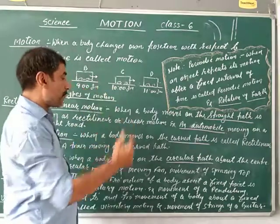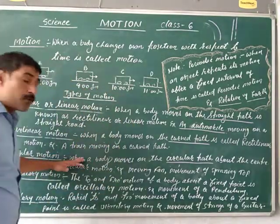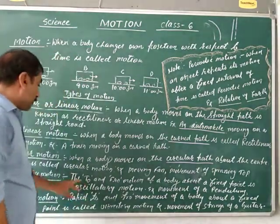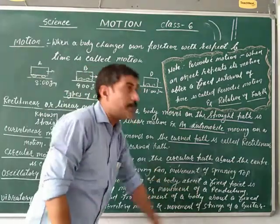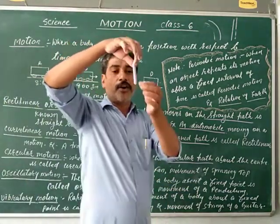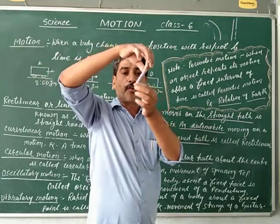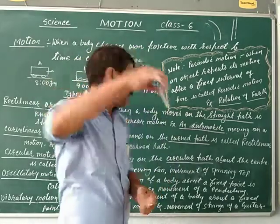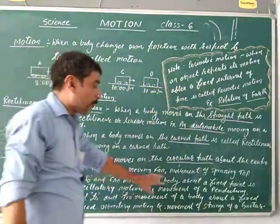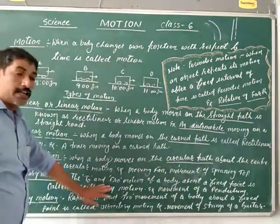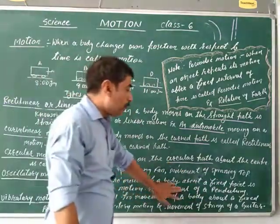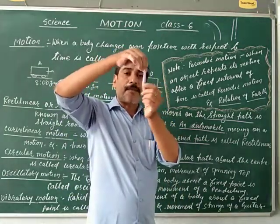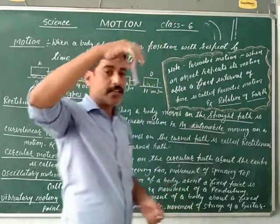Next type of motion is oscillatory motion. The to-and-fro motion of a body about a fixed point is called oscillatory motion. For example, the movement of a pendulum — this type of motion is known as oscillatory motion.